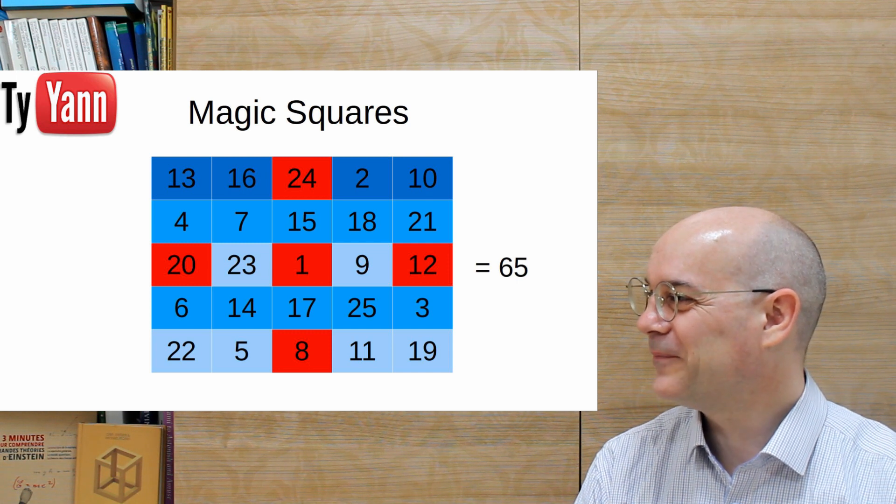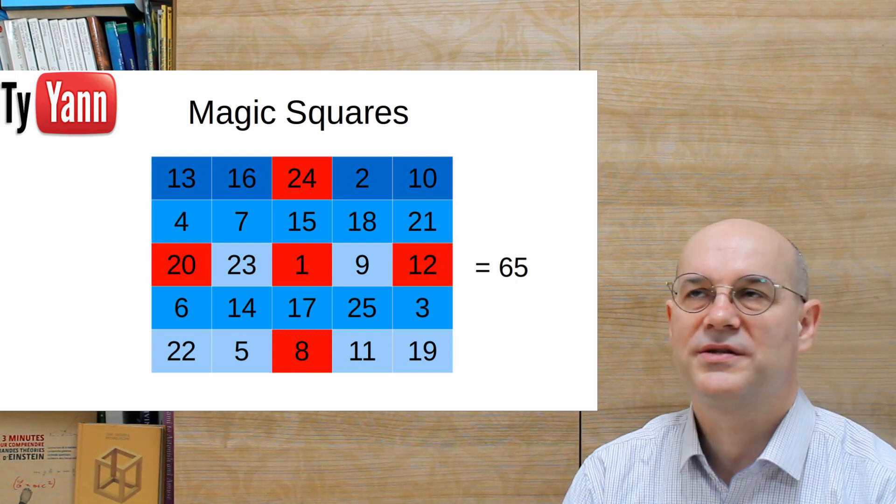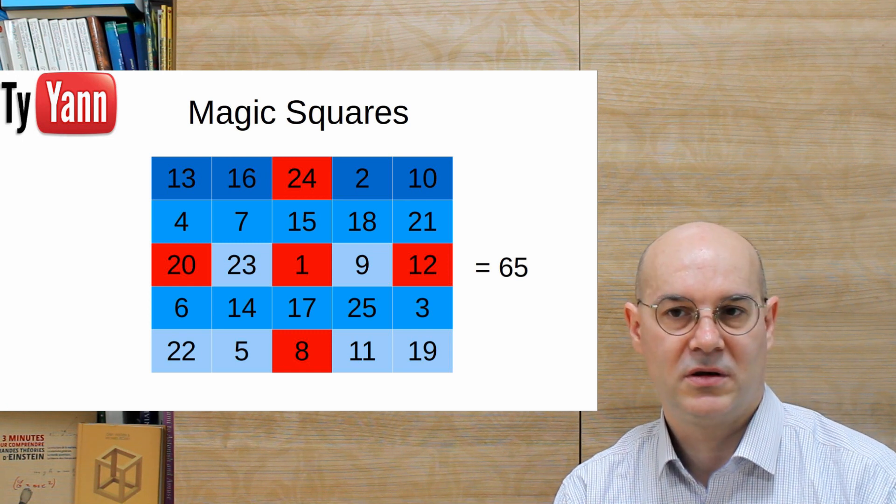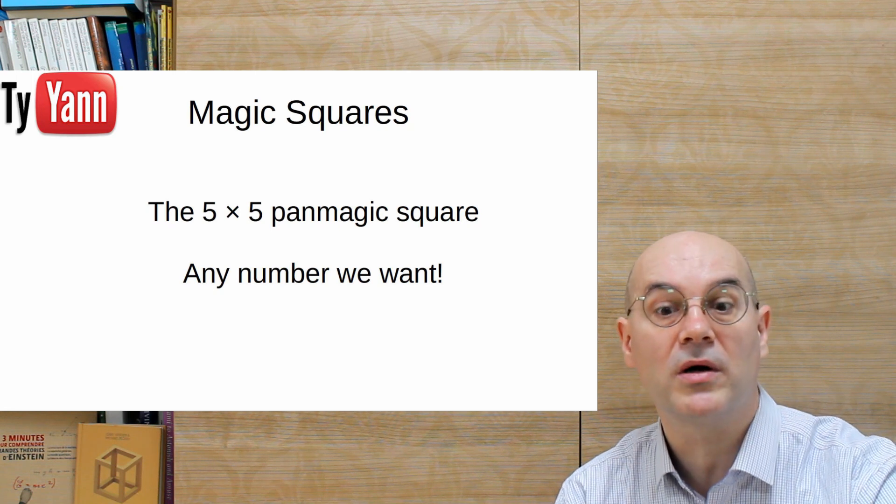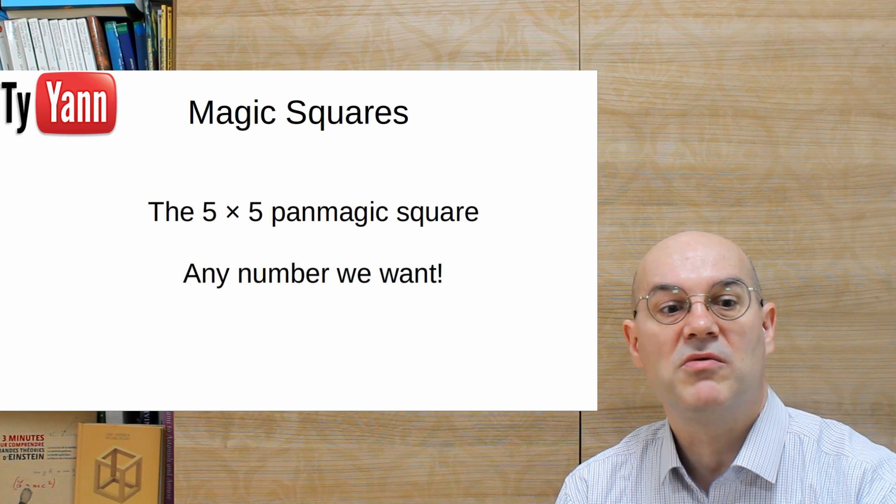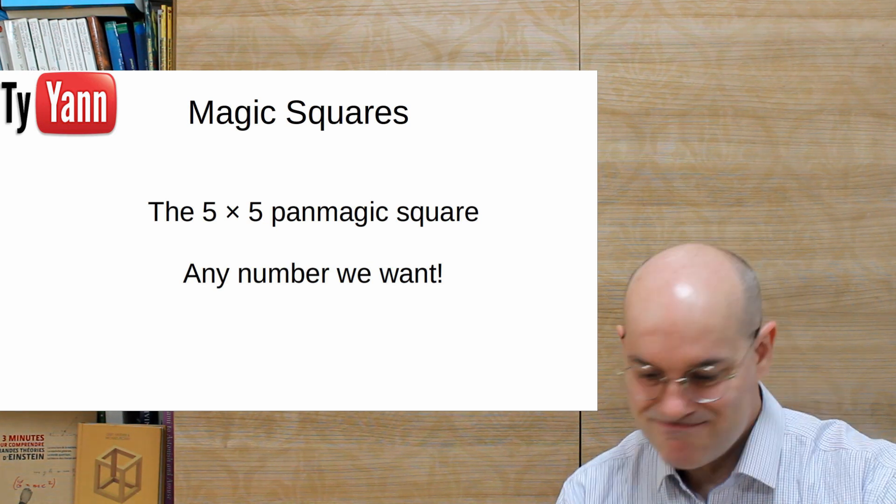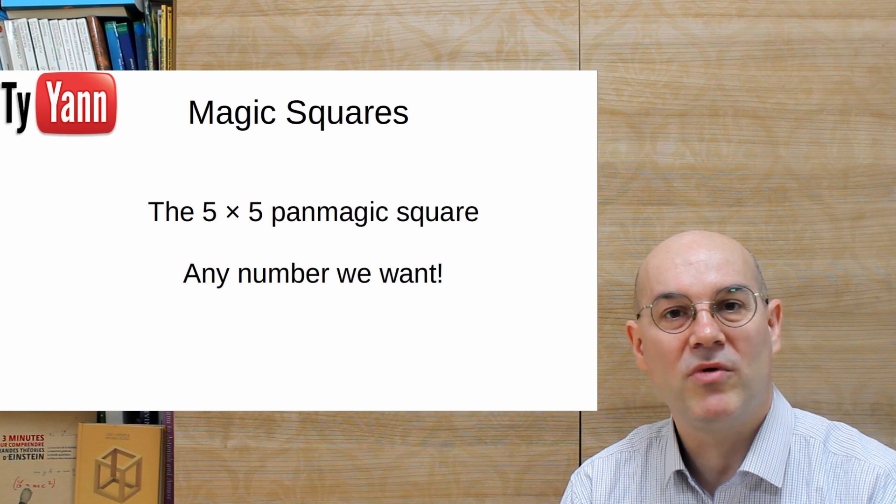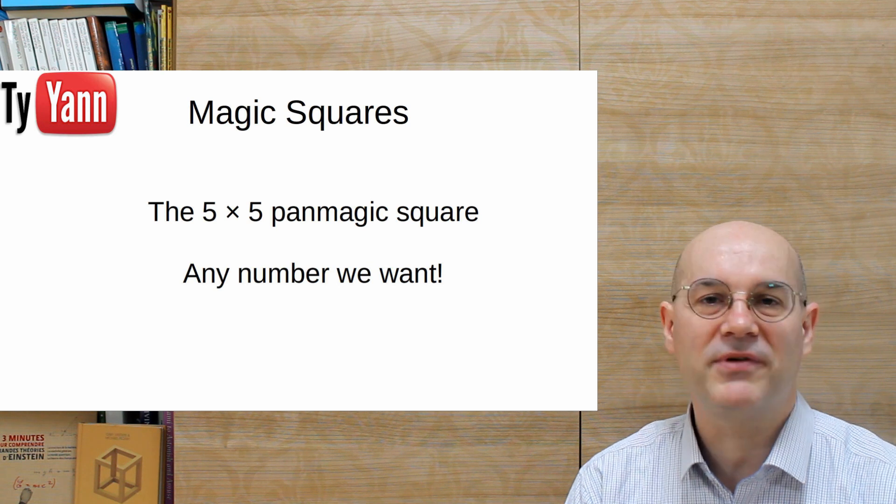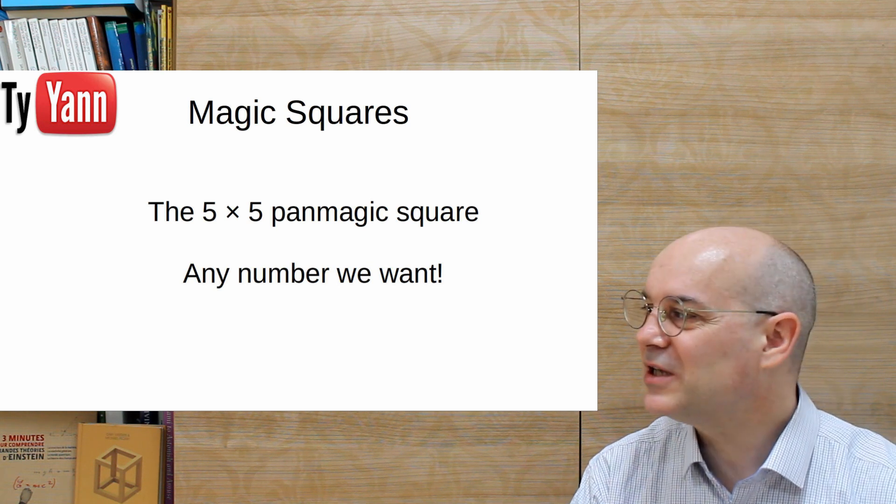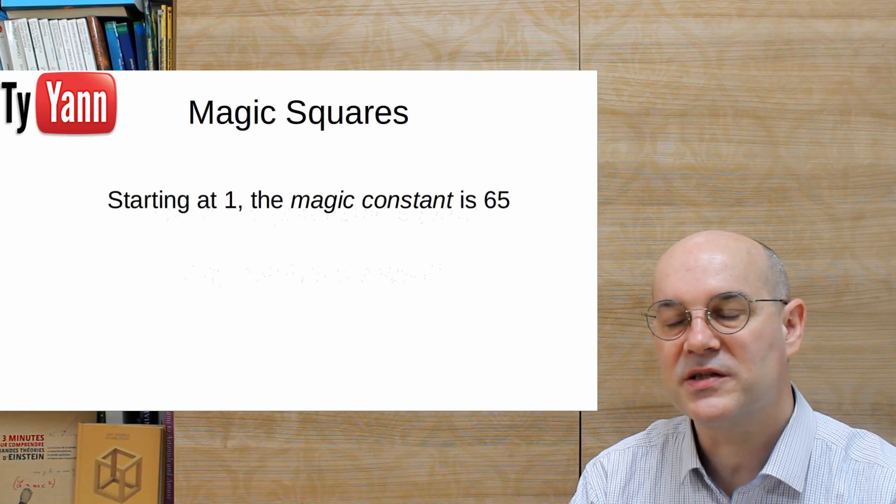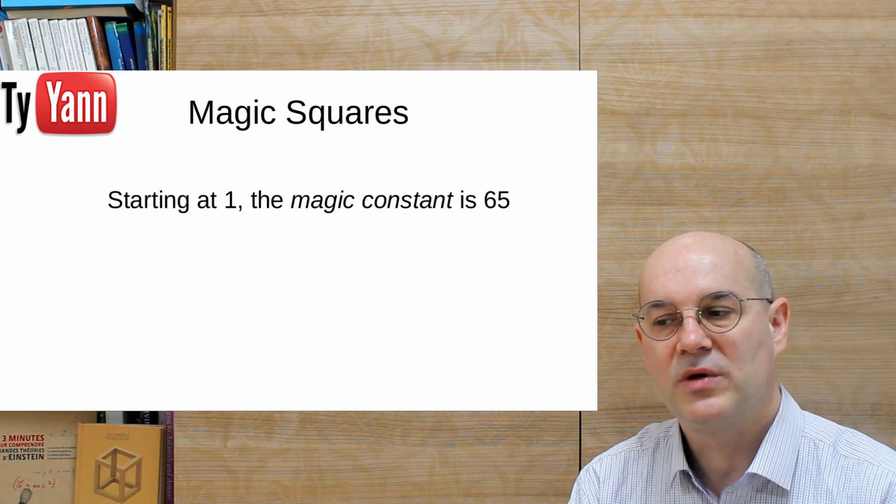But there's more, because 65, okay, it's 65. But what about you can make any number you want? I mean, imagine you have a favorite number, you ask somebody a number, and then you fill up the grid, and it's his number everywhere he wants. Everywhere he's looking for, he's going to find the number he wants. So how does this work? Well, it's not very difficult, but it's not very simple. Just bear with me a little bit. So when we start at one, the magic constant is 65. So let's change it. What about we start at zero?